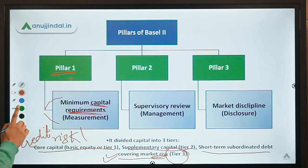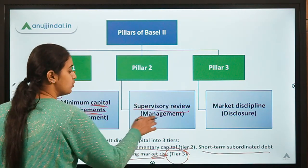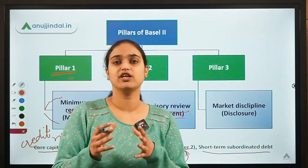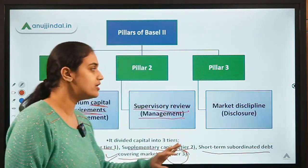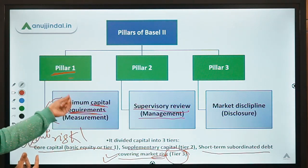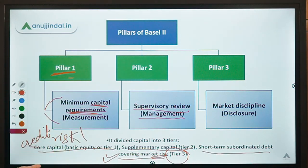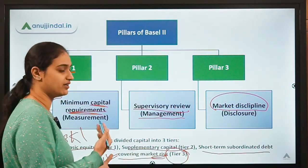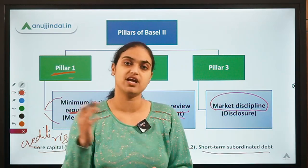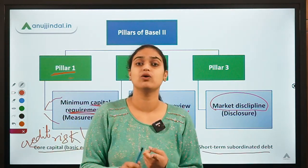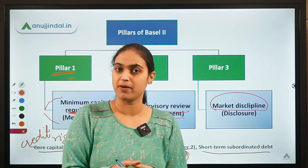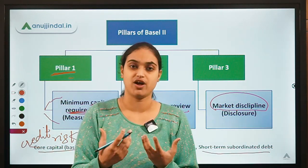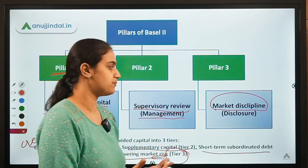The second pillar of Basel 2 is supervisory review — how to increase regulatory supervision of banks by accounting for liquidity risk, legal risk, and systematic risk. The third pillar is market discipline — banks need to disclose certain things to central banks, including their risk exposure and capital adequacy ratio. If there is transparency, it will help ensure better discipline in the banking sector.